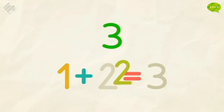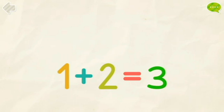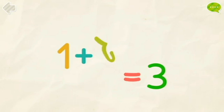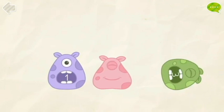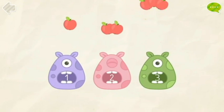1, 2, 3. 1 plus 2 equals 3. Okay, next. Pick with all the monsters the correct number of food.